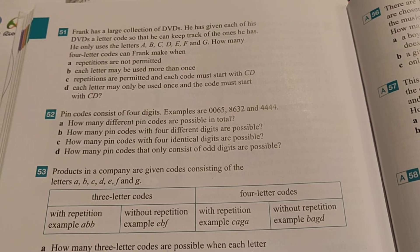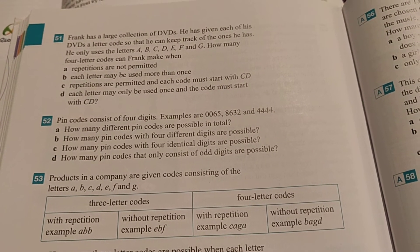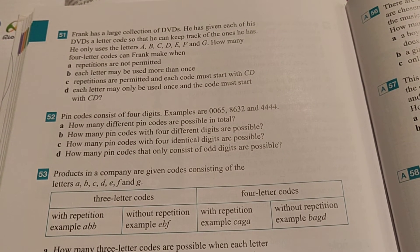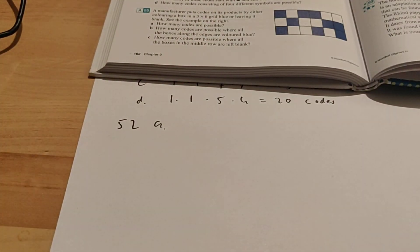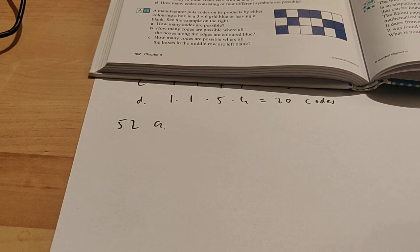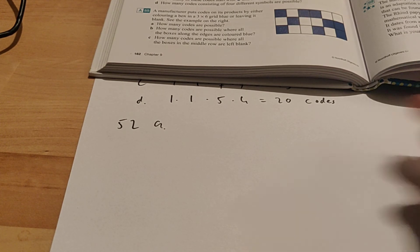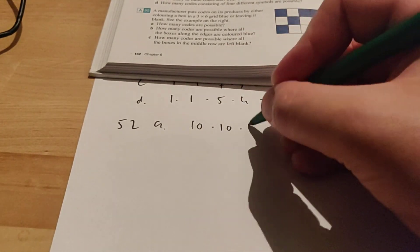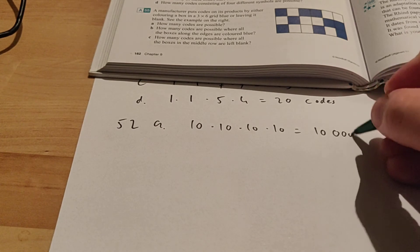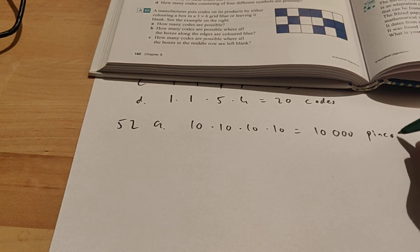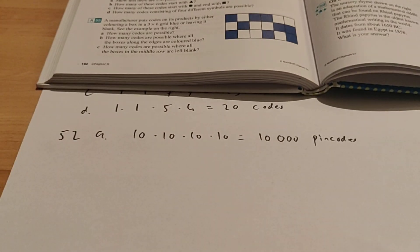Question A. How many different pin codes are possible in total? All right. So there are 10 different digits to choose from, from 0 till 9. And the question does not say that you cannot use them again. So we're just going to assume that we can. So we have 10 times 10 times 10 times 10. So you can make 10,000 different pin codes. That means that a lot of people actually have the same pin code. But if you don't have the correct bank pass, then you can't do anything with it.